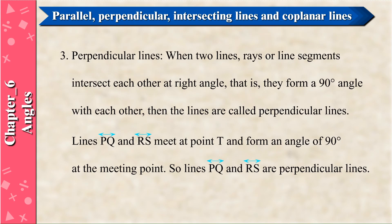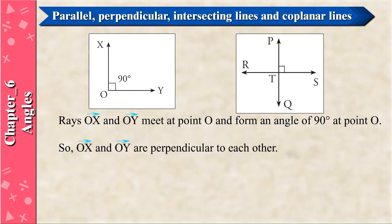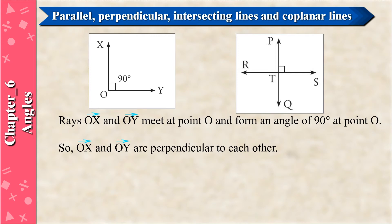Perpendicular Lines: When two lines, rays, or line segments intersect each other at a right angle — that is, they form a 90-degree angle with each other — then the lines are called perpendicular lines. Lines PQ and RS meet at point T and form an angle of 90 degrees at the meeting point, so lines PQ and RS are perpendicular lines. Rays OX and OY meet at point O and form an angle of 90 degrees, so OX and OY are perpendicular to each other. Perpendicular lines are represented as line PQ perpendicular to line RS, and ray OX perpendicular to OY. Examples: walls of a room, adjacent edges of a rectangular tank, adjacent edges of a table.